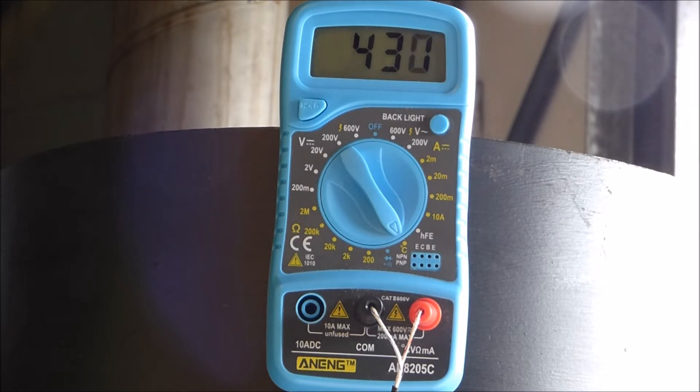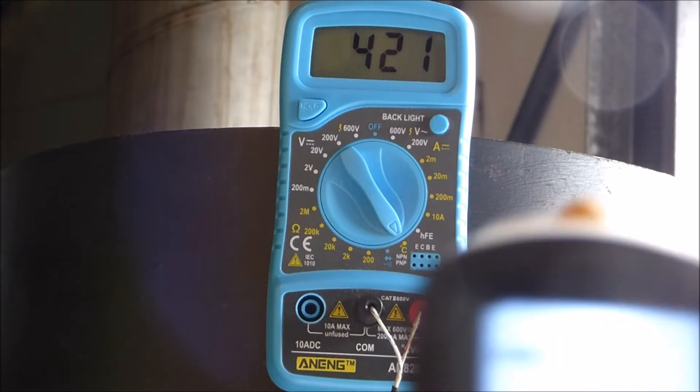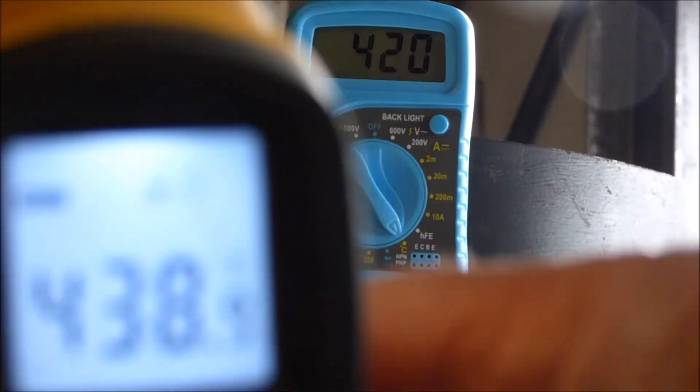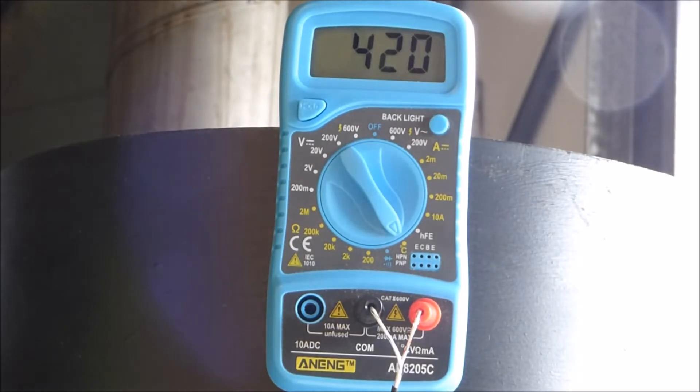So that gives you some sort of idea what it puts out. We'll just take a little reading on this one. Yeah so this is the hand one 438. So there's a difference between the two so it shows you how inaccurate they are. The thermal couple one's probably more accurate.